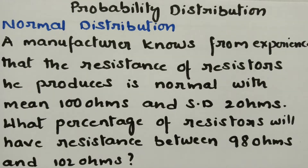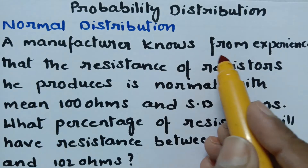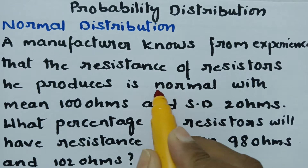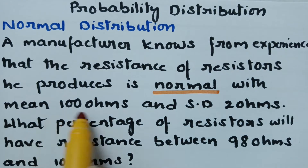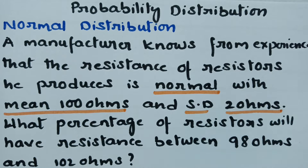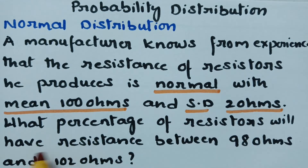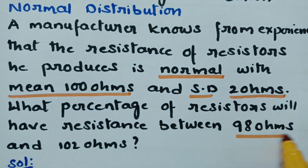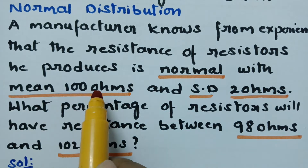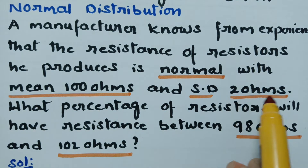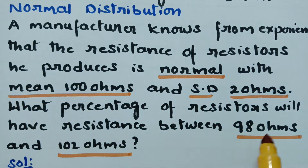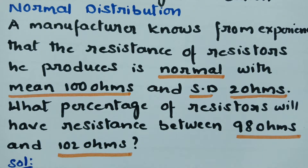This video is on normal distribution. A manufacturer knows from experience that the resistance of the resistors he produces follows a normal distribution with mean 100 ohms and standard deviation 2 ohms. We have to find what percentage of resistors will have resistance between 98 ohms and 102 ohms.